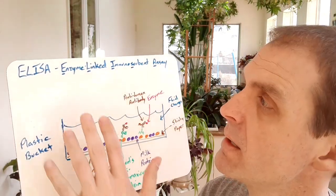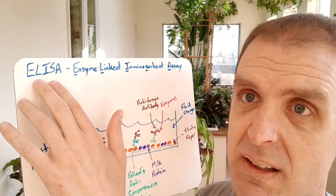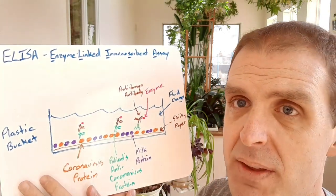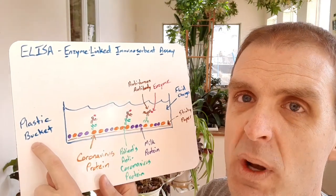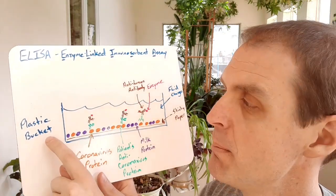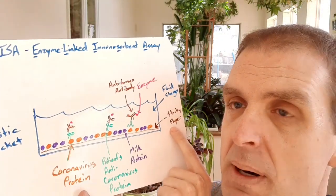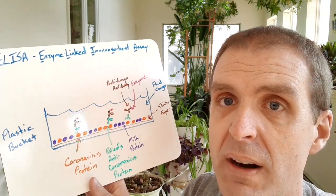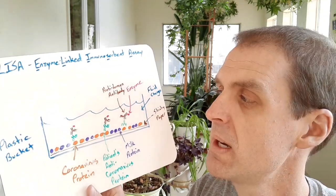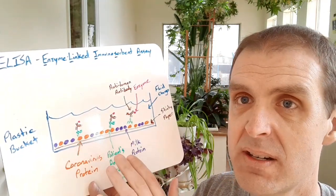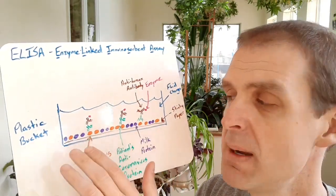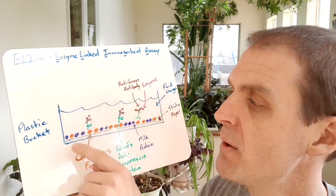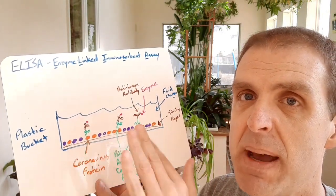The first assay we're going to talk about is generally known as an ELISA, which is an acronym for enzyme-linked immunosorbent assay. How this assay works is you get a plastic bucket—wells on a plate is what we would say in the lab—but you get a little plastic bucket and you put some sticky paper at the bottom. That paper will end up sticking to proteins. We can make the coronavirus proteins in the lab, so we can just automatically add in a bunch of coronavirus proteins into this well. Those will stick to the sticky paper. And you throw in a second protein, which could be, say, milk proteins, and those will fill in the gaps so that there's no remaining sticky paper to stick to.